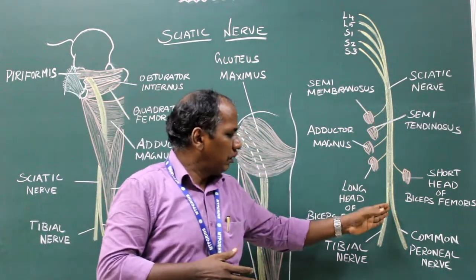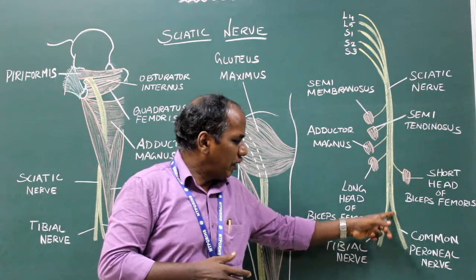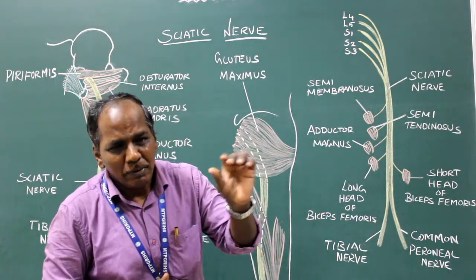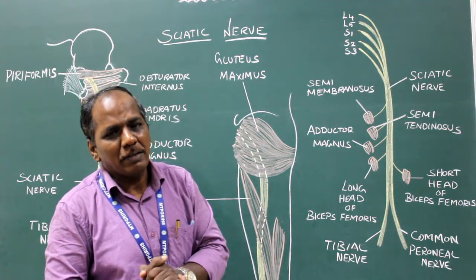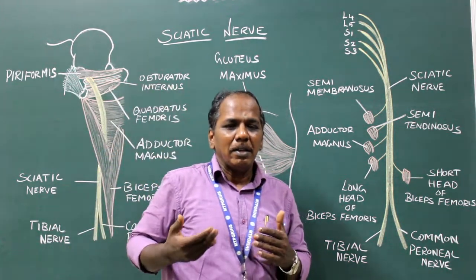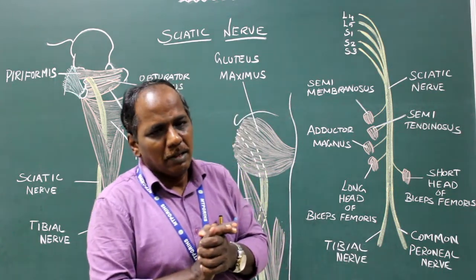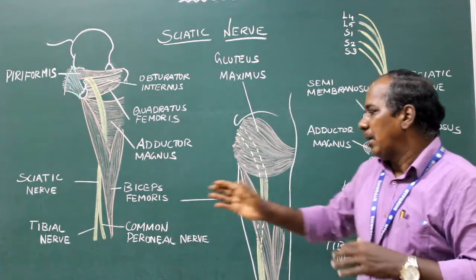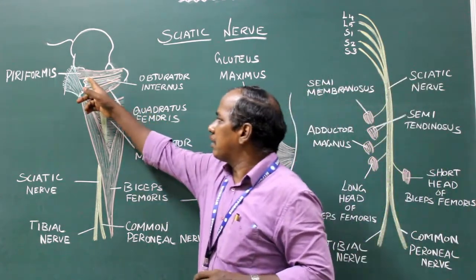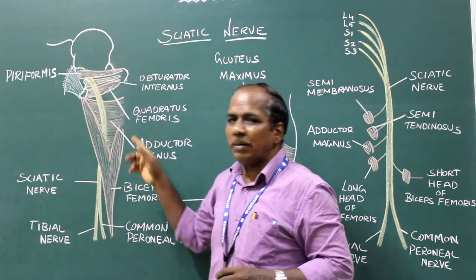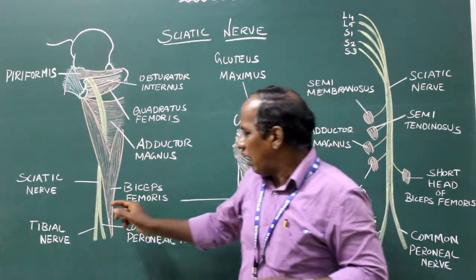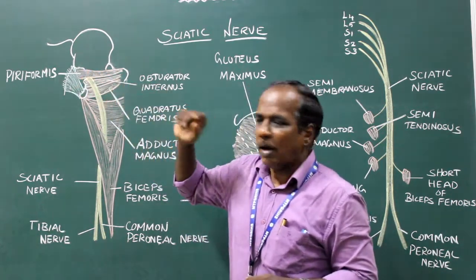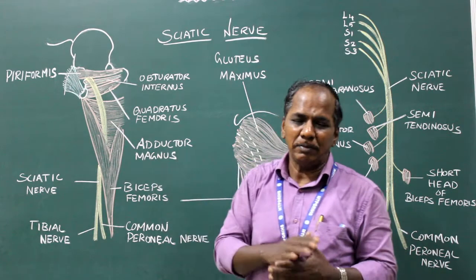Regarding variation: instead of dividing at the junction of the upper two-thirds and lower one-third of the thigh, sometimes the division takes place in the pelvic region. In such cases, the tibial component emerges near the lower margin of the piriformis and the common peroneal component either pierces the piriformis or comes out on the upper border of the piriformis.